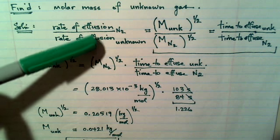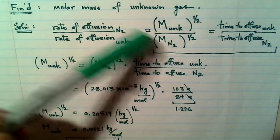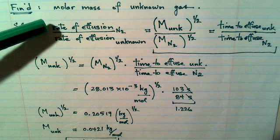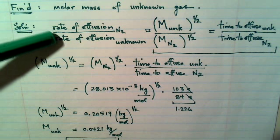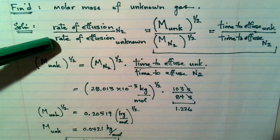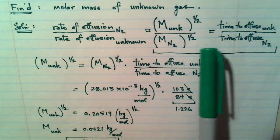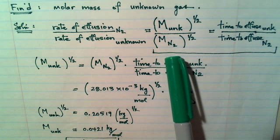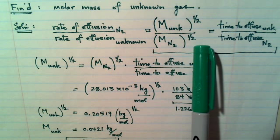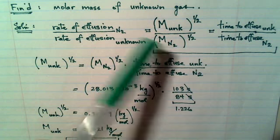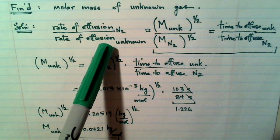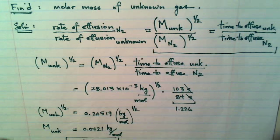is that the rate of effusion is inversely proportional to the square root of its molar mass. And so if I compare and create this ratio of the rate of effusion of nitrogen over the rate of effusion of the unknown gas, that's equal to the ratio of the molar mass of the unknown to its square root over the molar mass of the nitrogen gas to the square root. And what's important to note here is that I have this inverse relationship between the rate of effusion of a gas and the square root of its molar mass.